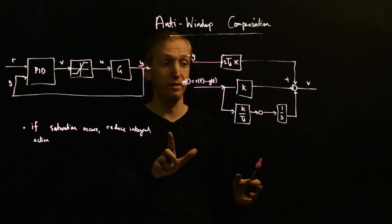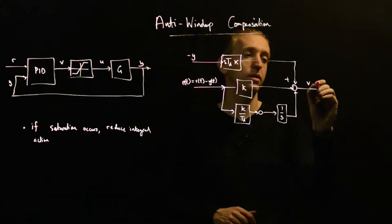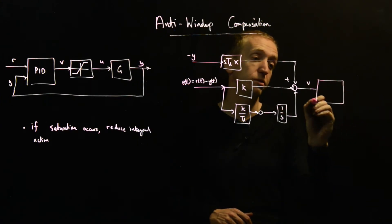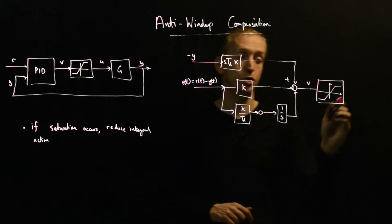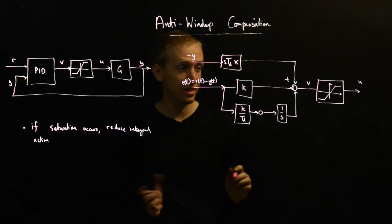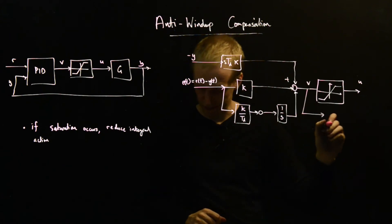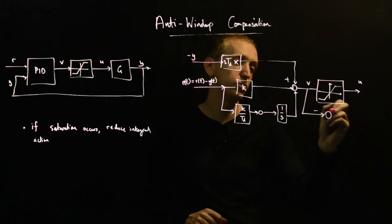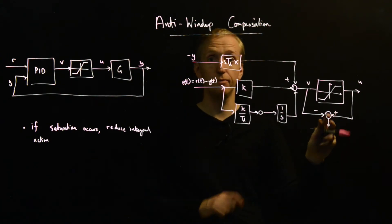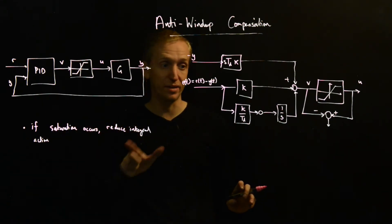And so what's the method for compensating for saturation? Well, if saturation occurs, we reduce integral action. And the way that we're going to do that is by including our saturation block. So we know our actuator is saturating. And so this is our signal, U. And so how do we tell if we're saturating? Well, we just compare U and V. And I just need to get my signs the right way around. So we'll do a minus there. And we'll do a plus here. So this signal here, this is only non-zero when we're saturating. So this signal here is capturing exactly the scenario of when saturation occurs.